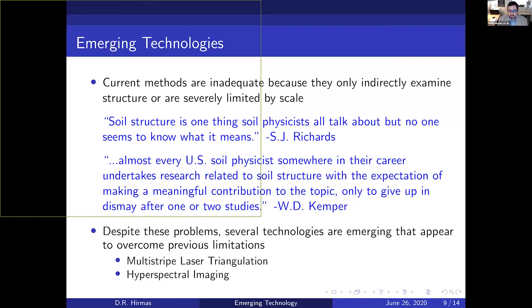Despite those problems, there are several technologies that are really promising. These are ones we focused on in our lab, but other labs are working on these too. The first one is multi-stripe laser triangulation. The second is hyperspectral imaging.